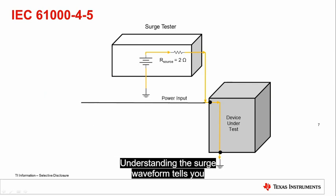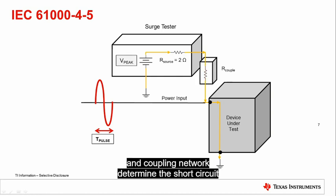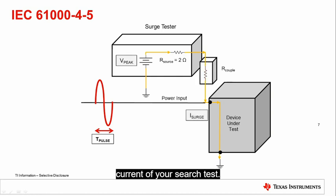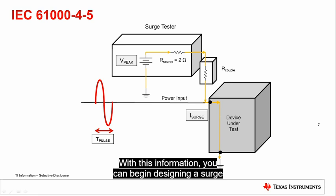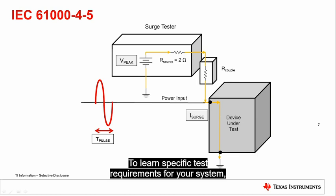Understanding the surge waveform tells you your surge pulse length, while the open circuit voltage and coupling network determine the short circuit current of your surge test. With this information, you can begin designing a surge protection stage. To learn specific test requirements for your system, reference relevant product standards or approximate based on environmental risk factors.